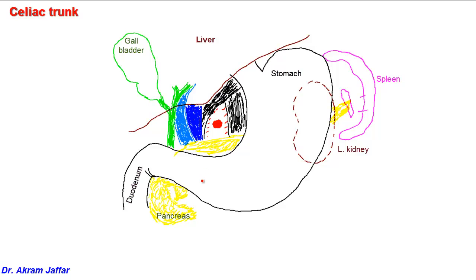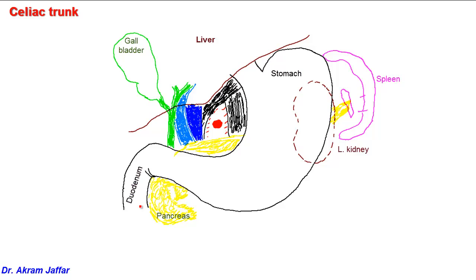The celiac trunk is the artery that supplies the foregut from the distal end of the esophagus, including the stomach, the first and half of the second part of the duodenum. Embryologically, the boundary between the midgut and foregut is located midway along the second part of the duodenum, where the major duodenal papilla is located. The celiac trunk also supplies the derivatives of the foregut — the liver, the pancreas, and the spleen.